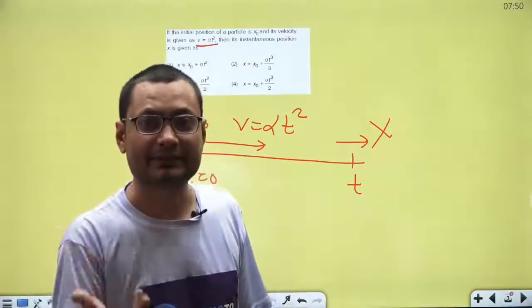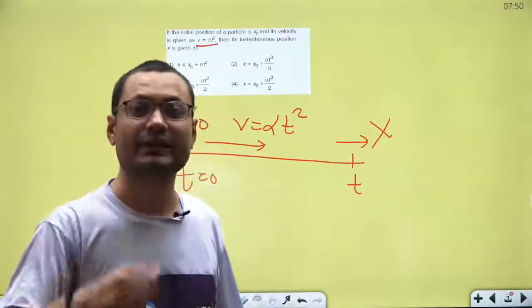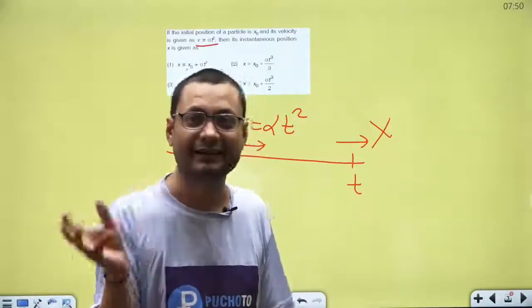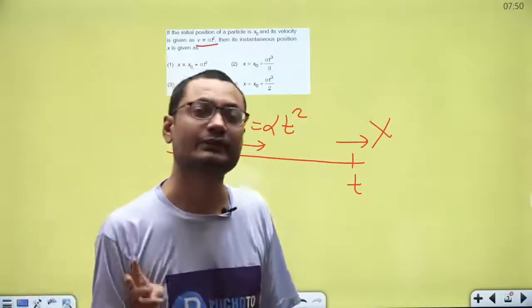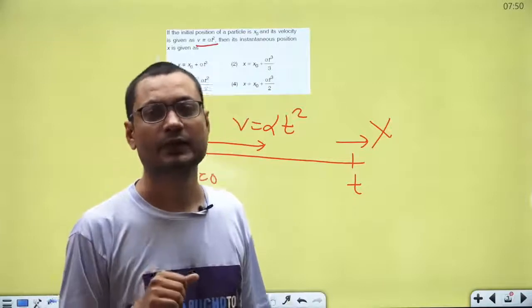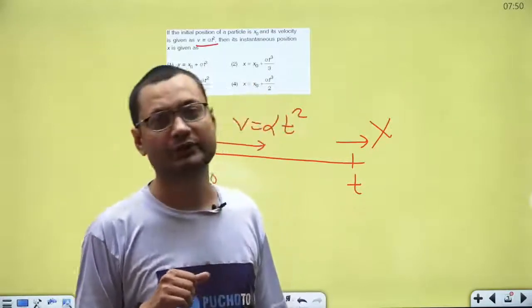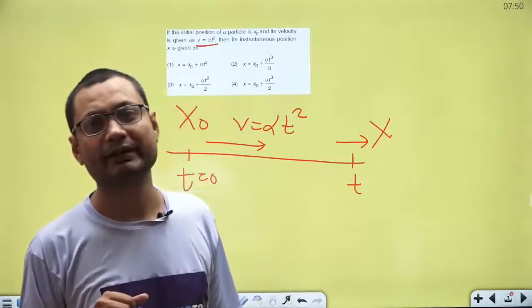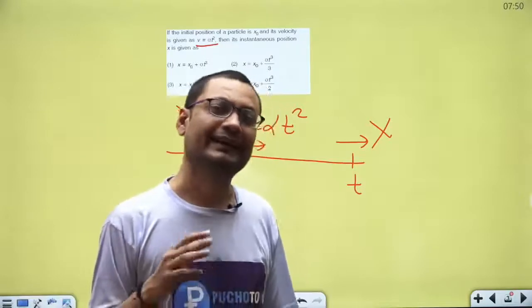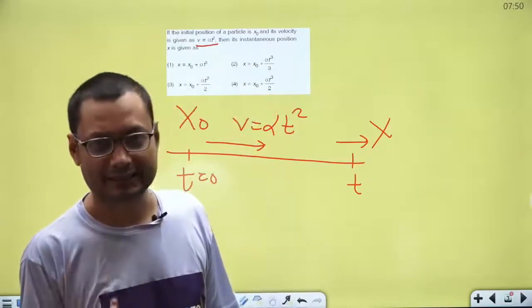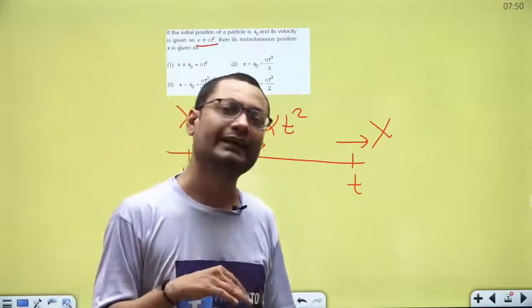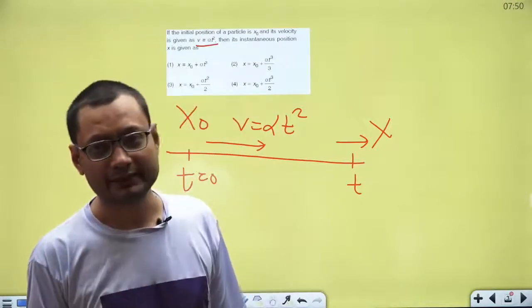Kinematics की 4 basic equations क्या क्या होती हैं? v = dx/dt; a = dv/dt और v·dv/dx; ∫v dt = x2 − x1; ∫a dt = v2 − v1।